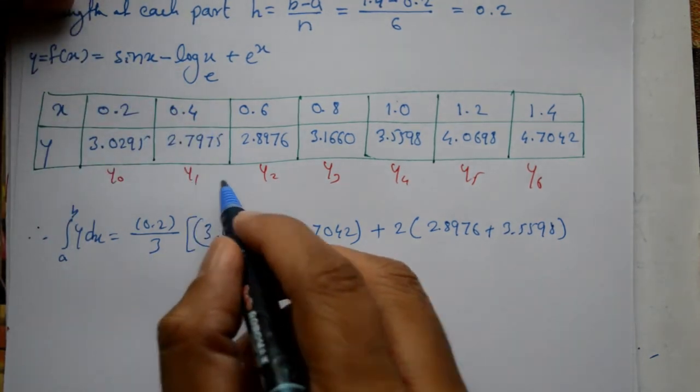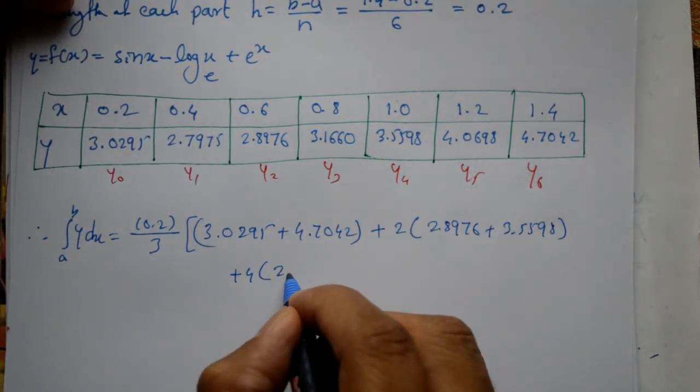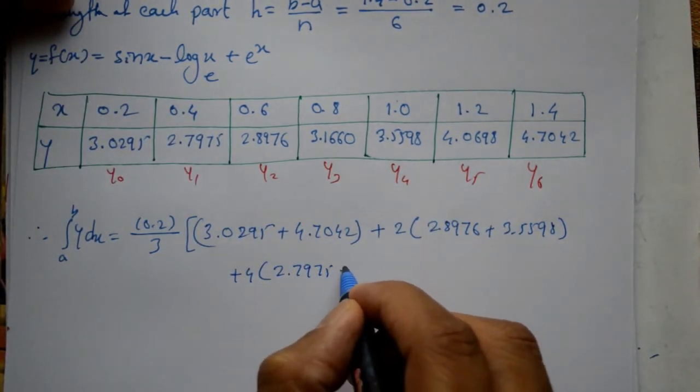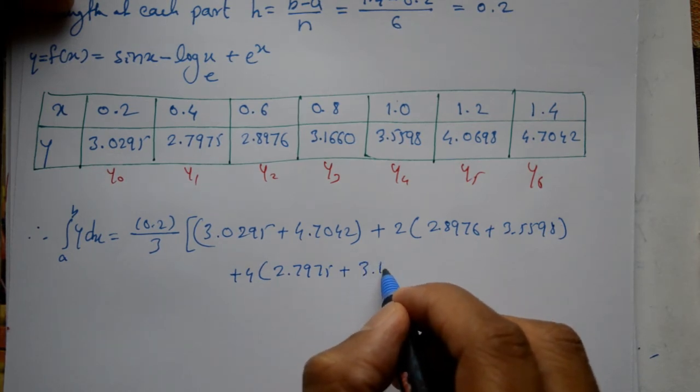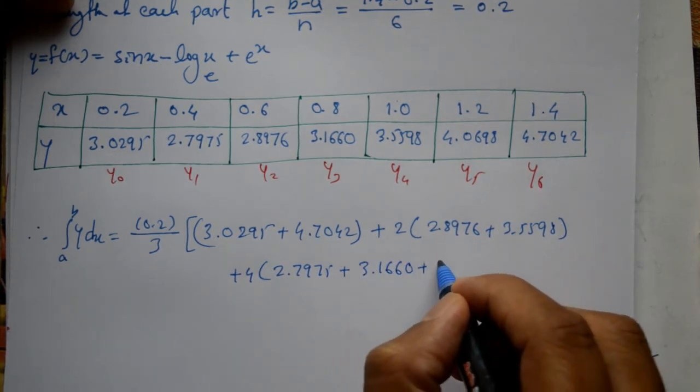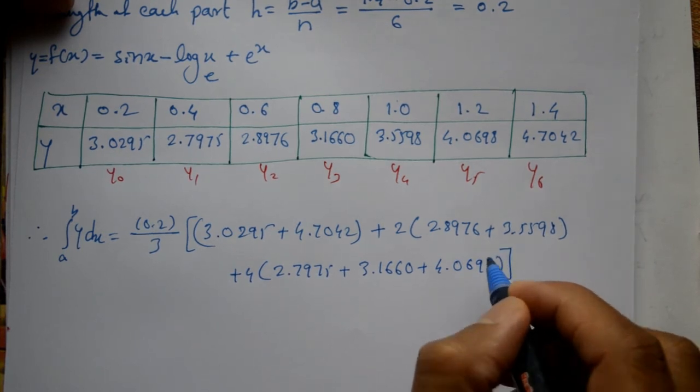Plus 4 into odd numbers: y1, y3, y5. That's 2.7975 plus 3.1660 plus 4.0698.